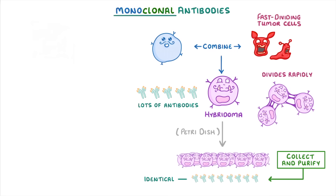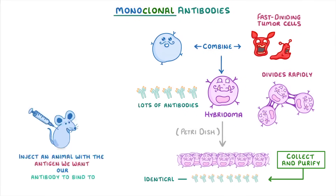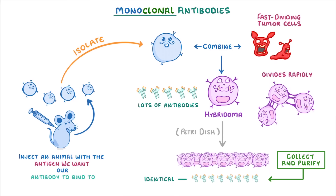Another thing you need to know is that to get the B lymphocytes that produce the correct antibody in the first place, we normally inject an animal, like a mouse, with the antigen that we want our monoclonal antibody to bind to. Because the antigen is now within the mouse, the mouse's immune system is going to generate a response and produce loads of B lymphocytes that are specific to that antigen. And this means that we can easily isolate those B cells and combine them with our fast dividing tumour cells.